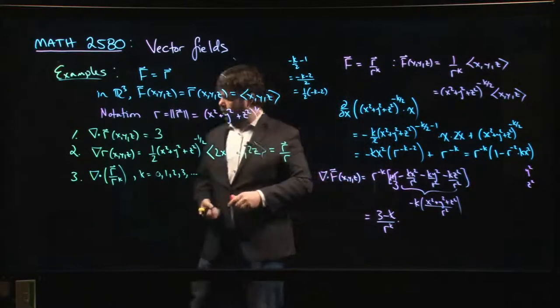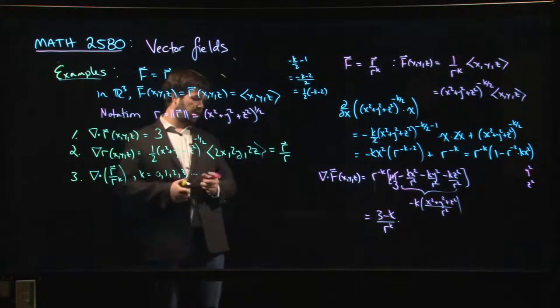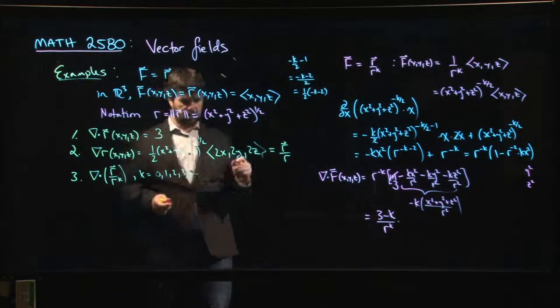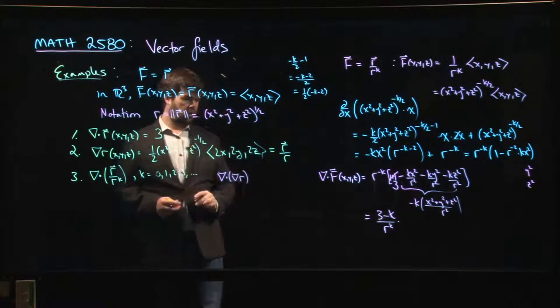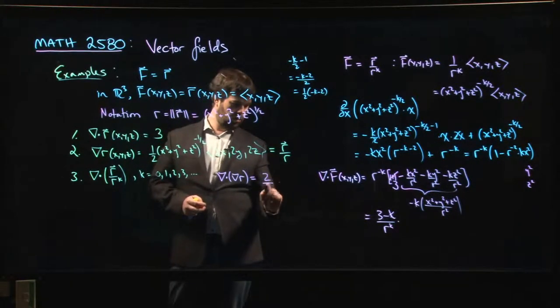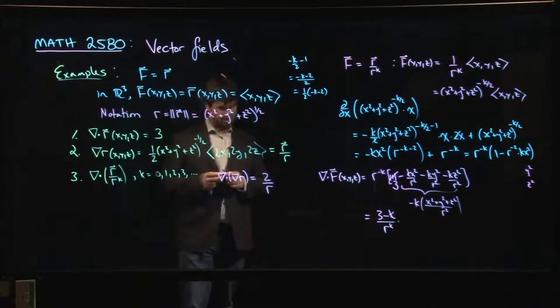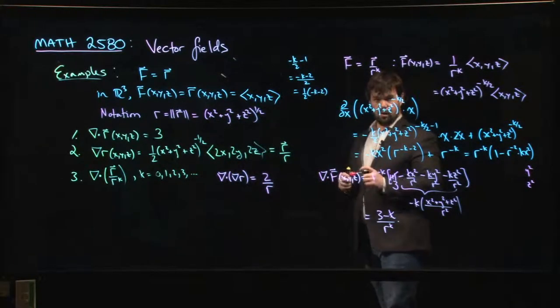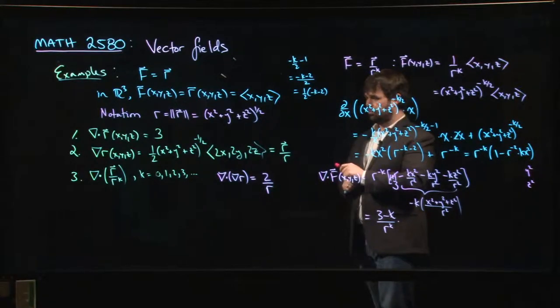So coming back, if I wanted to do the divergence of this gradient, I can put k equal to 1 and I could work that out. I could work out that the divergence of the gradient of R is going to be 2 over R. Interesting. Okay, so that's the result. You can do what you want with it. Actually, what's maybe more interesting here is that if k is equal to 3, the divergence is 0.